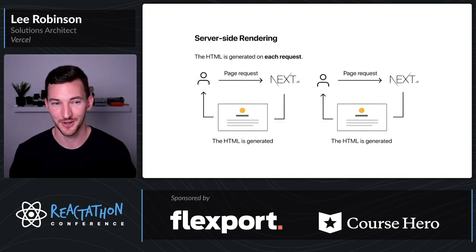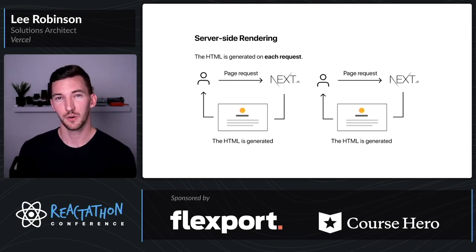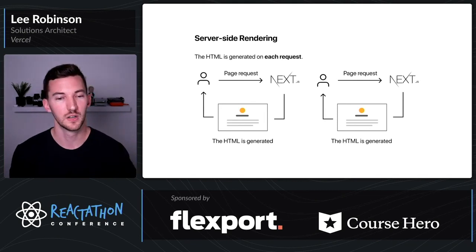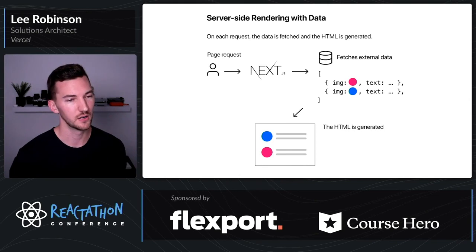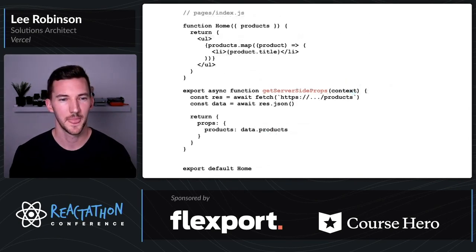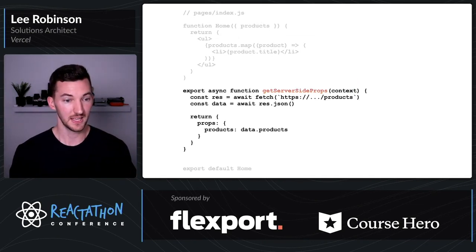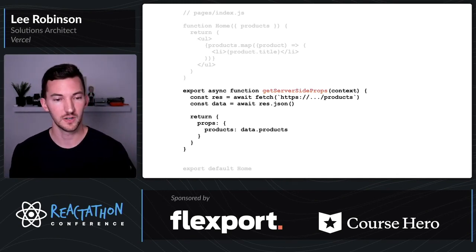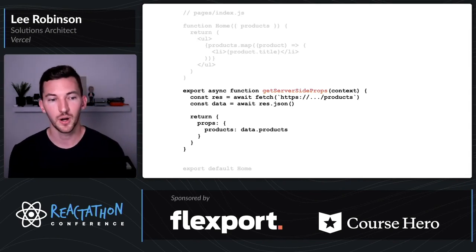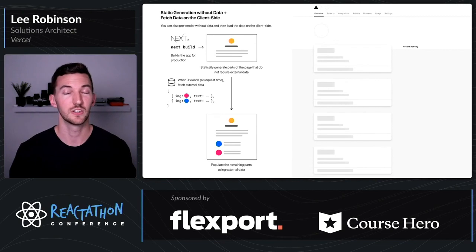The next thing I want to talk about is server-side rendering. On every request, we're generating new HTML. On every visit a user makes to your website, it's talking to the server — there's a blocking request fetching that HTML from the server. You're probably doing this with data: the request comes in, you fetch your products or posts, and then the HTML is generated and sent to your users. For this we use a function called getServerSideProps, which runs in the Node.js context so we can talk to things on the server, and it's not included in our client-side bundle. You fetch products, return them as props to your React component — it works exactly the same, just on every request.